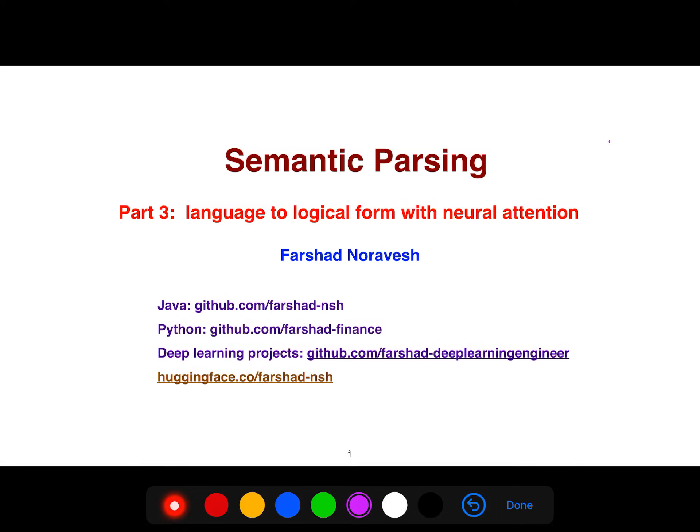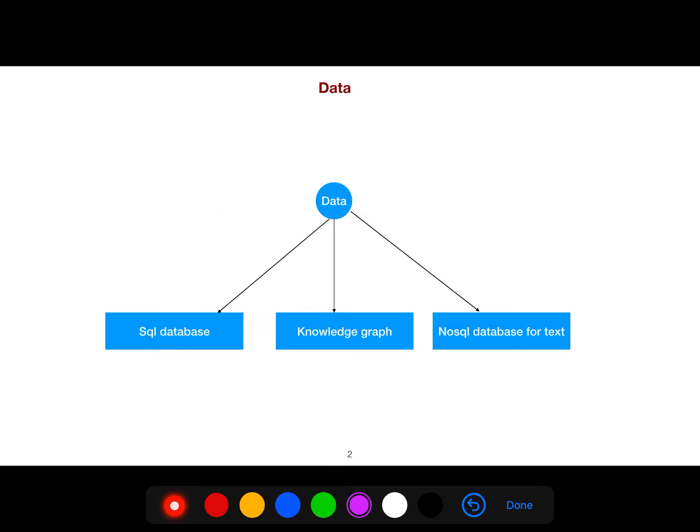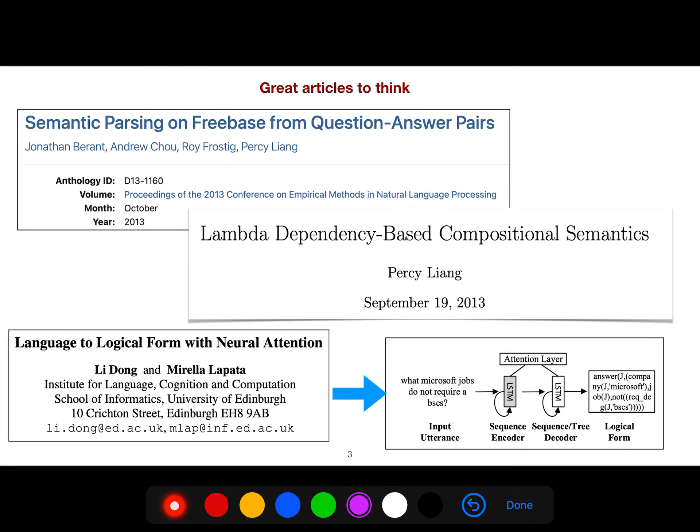I want to explain this article, Language to Logical Form with Neural Attention from University of Edinburgh. But before that, I need to talk about something elementary. Our data could be a SQL database, knowledge graph, NoSQL database, or any other forms. There are some great articles to think about, for example, language to logical form.